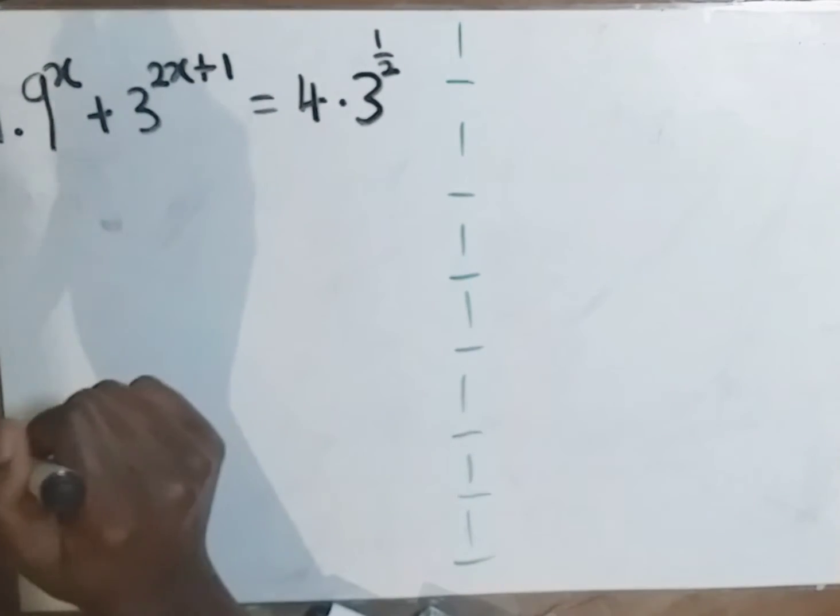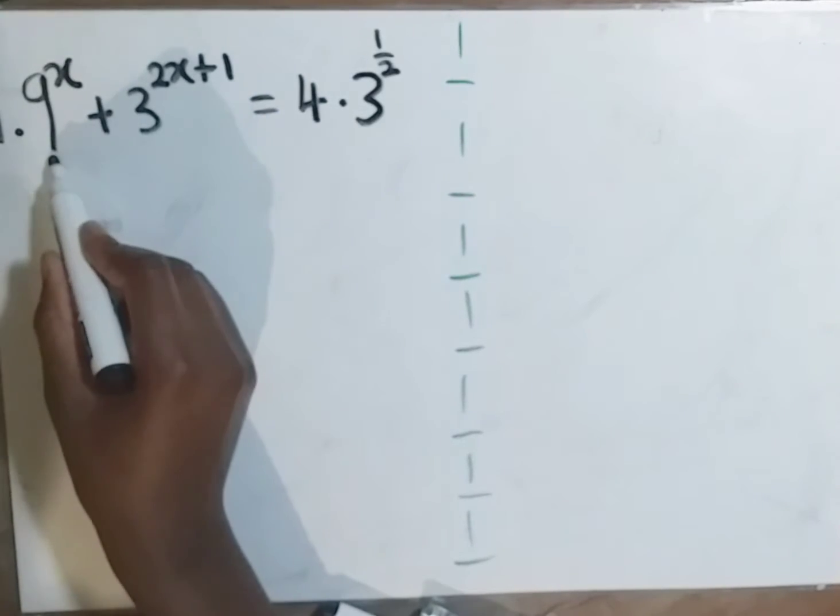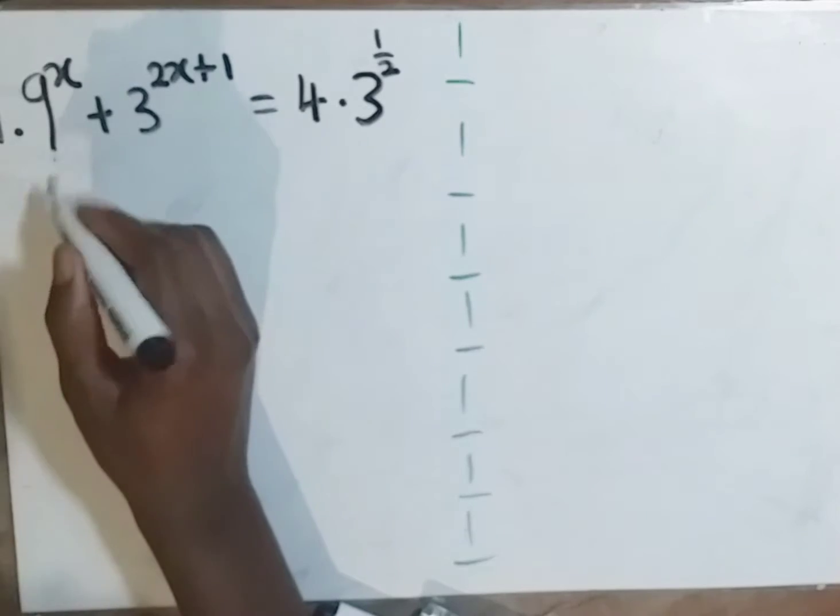The first thing that we need to do on this particular one, we need to write 9 in terms of 3. We know that 9 is 3 to the power 2.